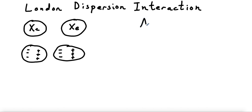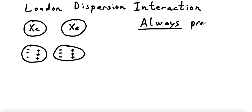When does this happen? It happens in anything with electrons — in other words, it always happens. So if you're ever asked whether we see London dispersion interaction between two atoms or molecules, the answer is always yes. A common misconception students have is that there's only one or two IMFs, or that there's some limit to the number. Often, a pair of atoms or molecules will have multiple IMFs pulling them towards one another.